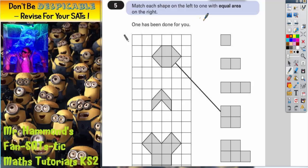Question 5. Match each shape on the left to one with equal area on the right. One has been done for you.